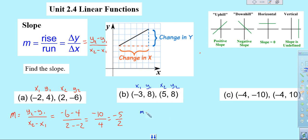So our formula is y2 minus y1 over x2 minus x1. So y2 would be 8, y1 would be 8, x2 would be 5 minus x1, which is negative 3.